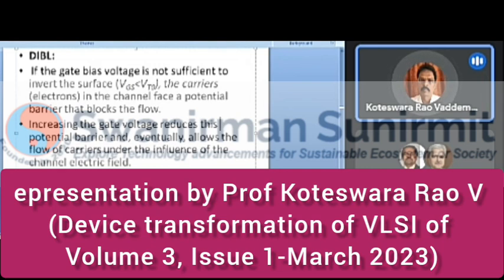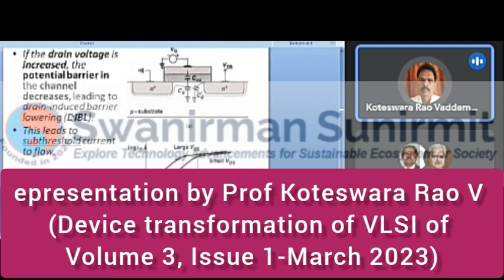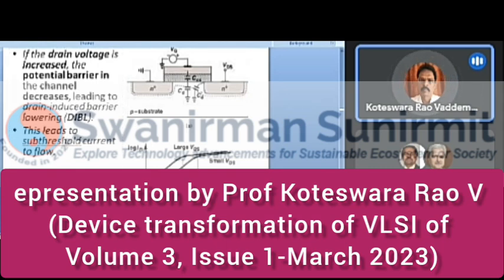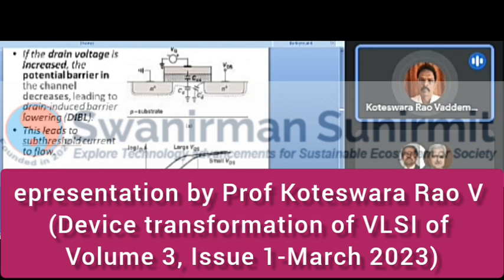By adjusting the VGS value, the potential barrier formed in the channel can be addressed. If the drain voltage increases, the potential barrier in the channel decreases, leading to Drain-Induced Barrier Lowering (DIBL). This leads to sub-threshold current flowing — current that flows below the threshold voltage. When VDS is large versus small, the threshold voltage variation can be observed; lower threshold voltage leads to sub-threshold current flowing, which is a disadvantage.